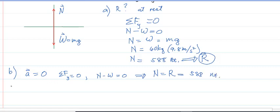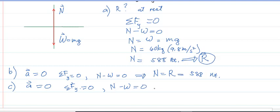For letter C, the elevator moves constantly downward. Again, acceleration is zero, so the summation of forces is equal to zero. The normal force minus the weight equals zero, and we still have the same normal force — the reading on the scale is equal to 588 Newtons.